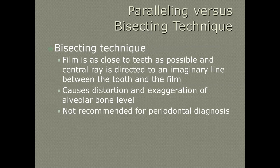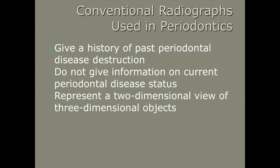Bisecting technique is used every day when the patient can't bite down all the way on the bite block, they have crowding, or they have tori that we have to adapt to — so we're estimating certain angles almost on a daily basis. With bisecting technique, the film is held as close to the teeth as possible. It does cause more distortion and exaggeration of the alveolar bone level, and it's not recommended for true periodontal diagnosis.